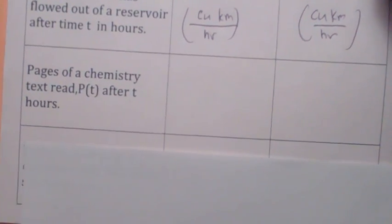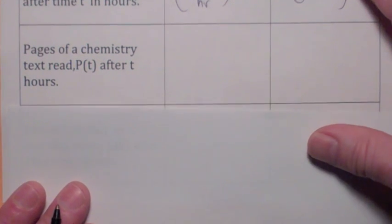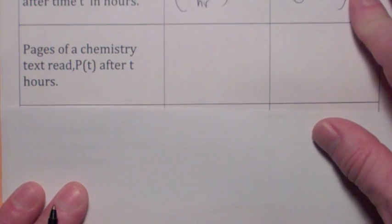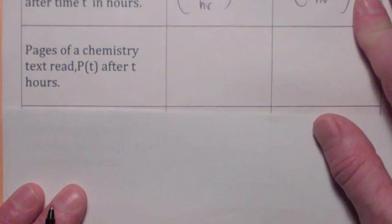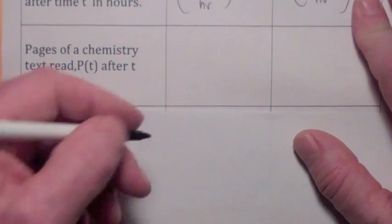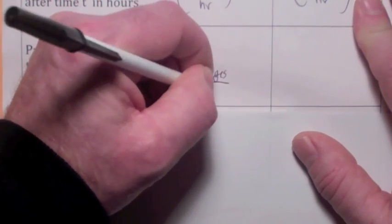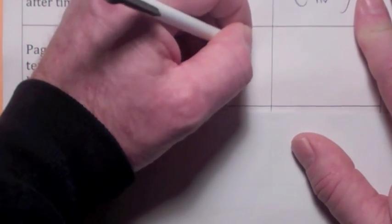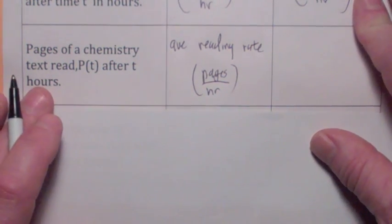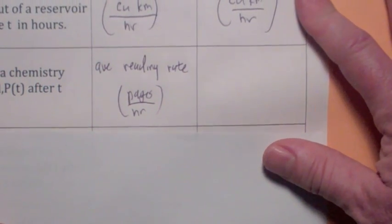Here's one you might be able to relate to. What if the function p(t) stands for the number of pages of a chemistry book you've read after t hours? Then the change in pages over change in time — the units would be pages per hour — would be the average reading rate. And then at a specific time, as the time interval gets smaller and smaller, this is getting close to the instantaneous reading rate. Units would be pages per hour.